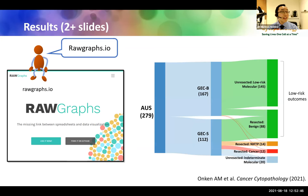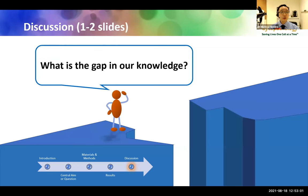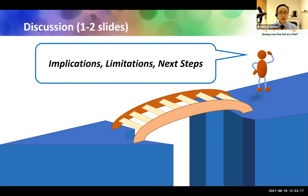Here's an example of an alluvial plot or Sankey diagram recently made using free online tools like rawgraphs.io. After presenting your results in these visually impactful ways, your next slide will be your discussion. For the discussion, it's helpful to circle back to that central aim or question, remind the audience of the gap in knowledge, and clearly state how your study bridged that gap. Use a slide to explain the limitations of your study, the implications for the field, and propose next steps.